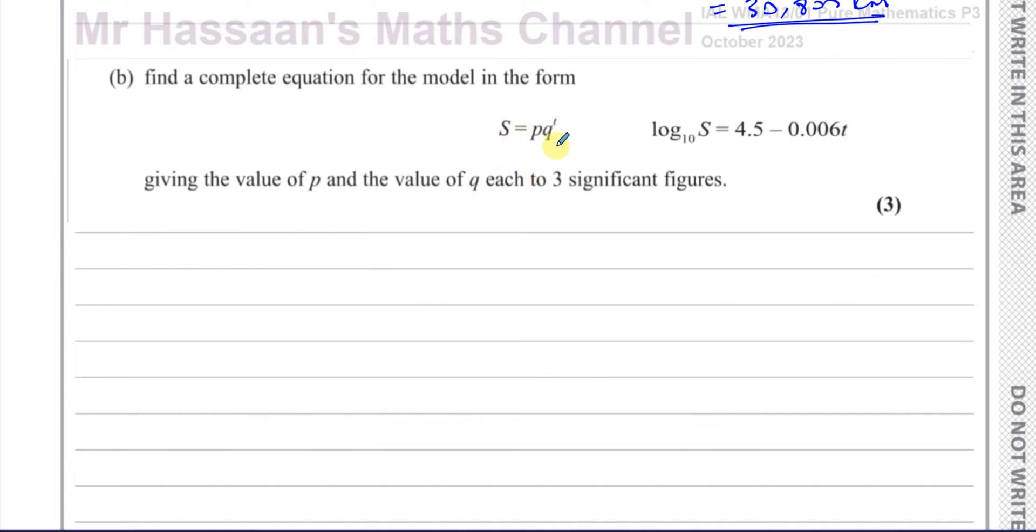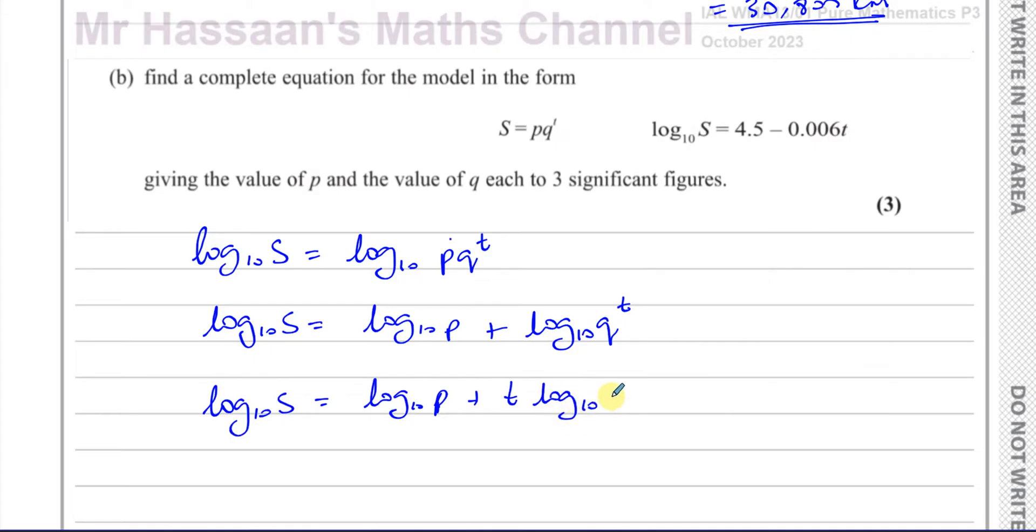We can take log₁₀ of both sides. So log₁₀(S) equals log₁₀(pq^t). Before I can do anything with this power, I have to split this into separate products, because that t is not a power of both p and q, only of q. So I'm going to write this as log₁₀(S) equals log₁₀(p) plus log₁₀(q^t). Then I can use the power law. So log₁₀(S) equals log₁₀(p) plus t times log₁₀(q).